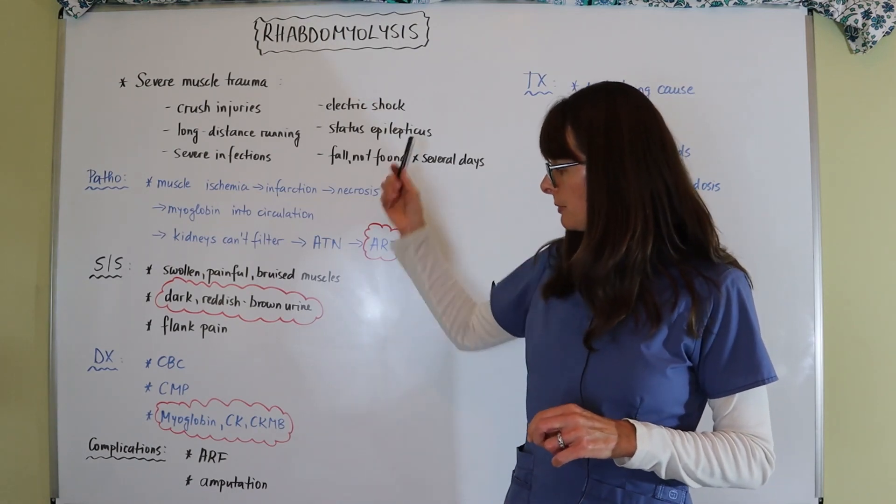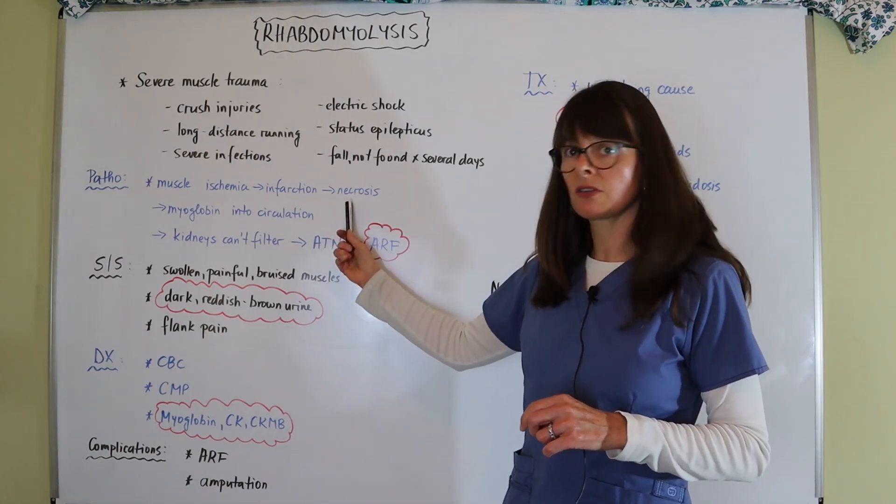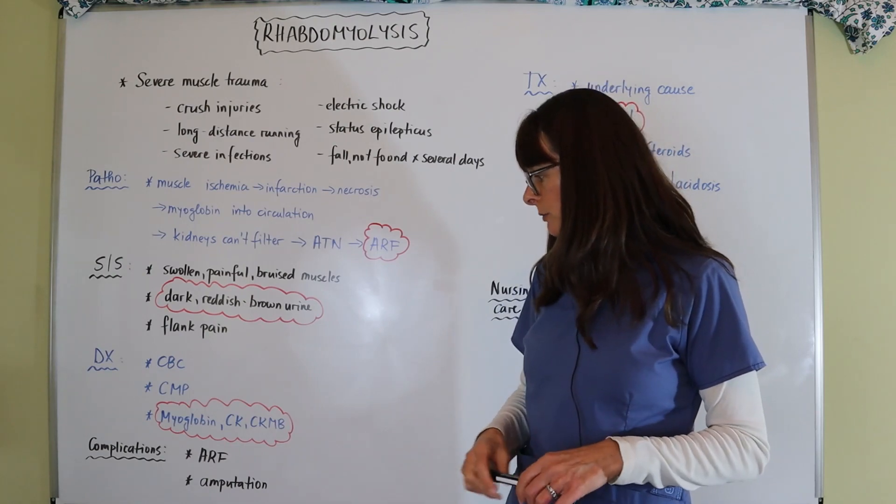Complications from rhabdomyolysis: acute renal failure and amputation. If the necrosis is so severe that the muscle damage cannot be reversed, maybe the limb will have to be amputated.